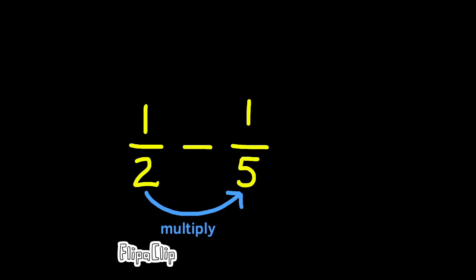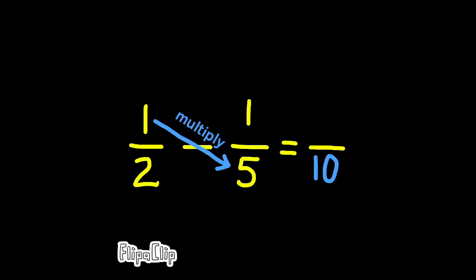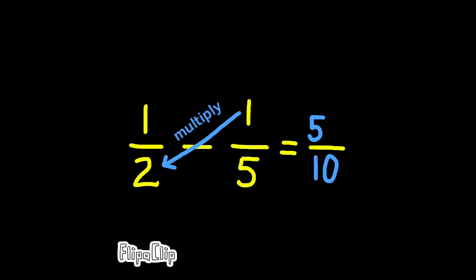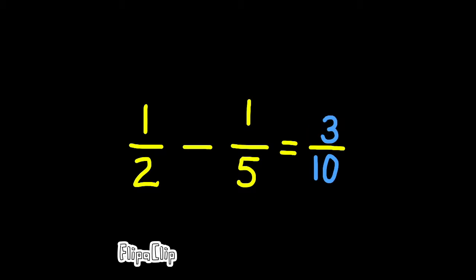The first step is multiply the denominators. Second step, multiply the left numerator by the right denominator. Third step, multiply the right numerator by the left denominator. In doing these three steps, you can see that 1 half minus 1 fifth becomes 5 minus 2 over 10. This represents 5 tenths minus 2 tenths, and 5 tenths minus 2 tenths is 3 tenths.